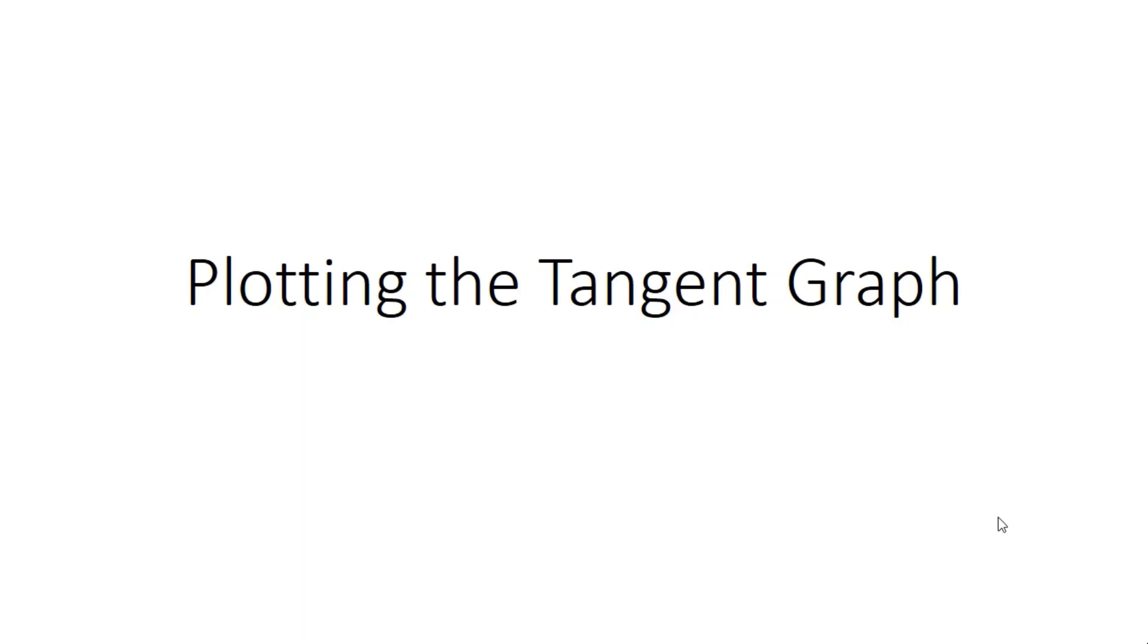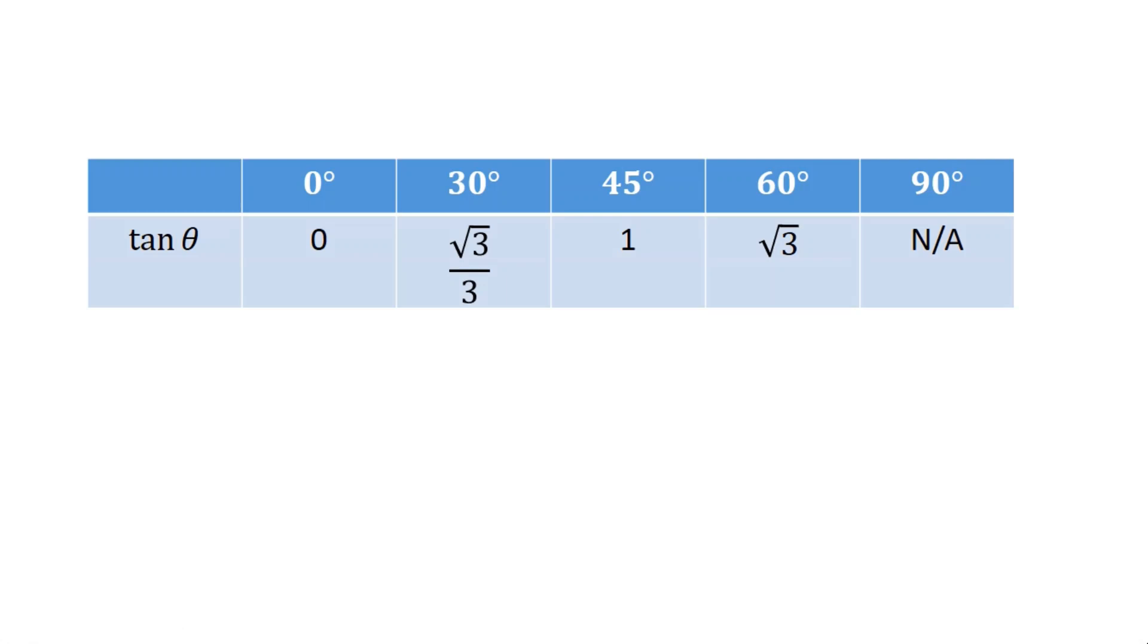So to get started, we'll begin with the values we already know, the exact values. So we know that tan of 0 is 0. We know that tan of 30 is root 3 over 3. And most importantly, we know that tan of 90 does not exist. Now that is going to be an extremely important fact to bear in mind.